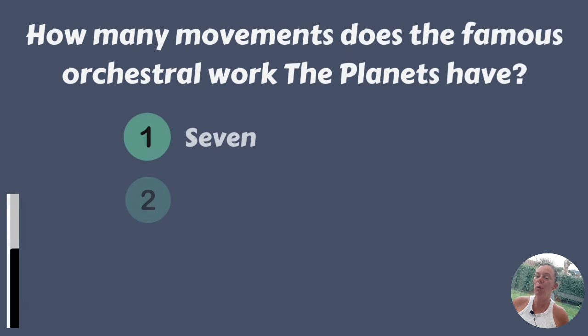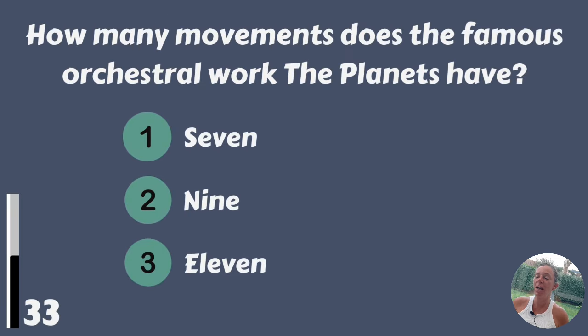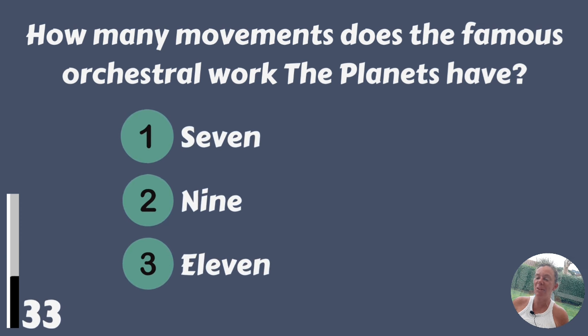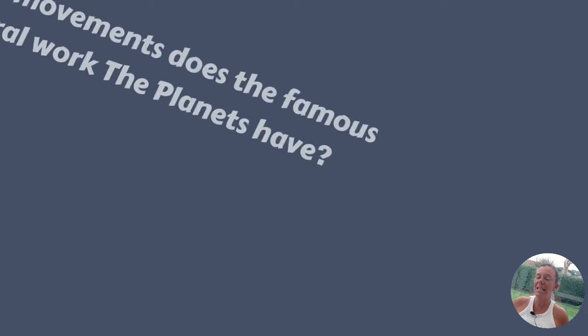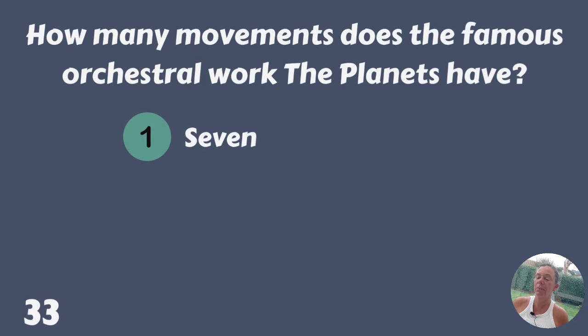How many movements does the famous orchestral work The Planets have? 7, 9 or 11? It's 7.